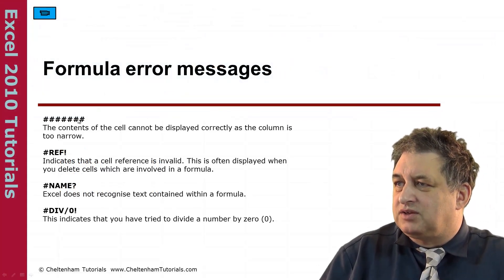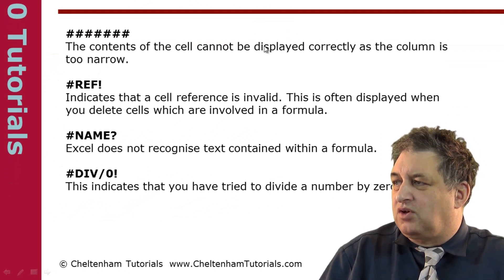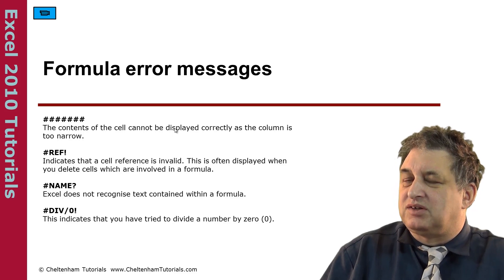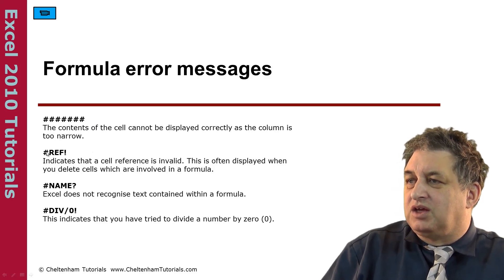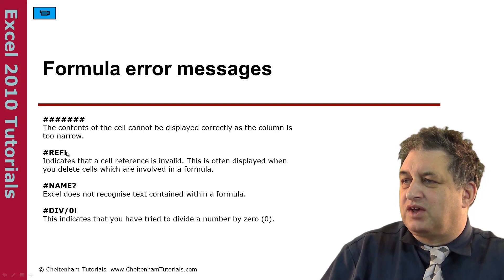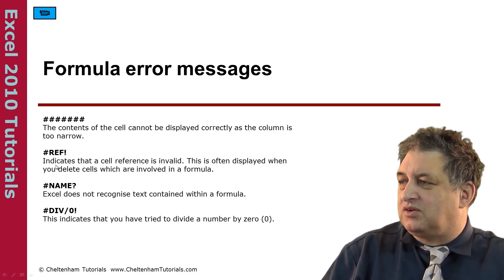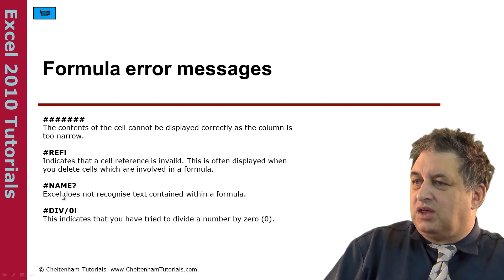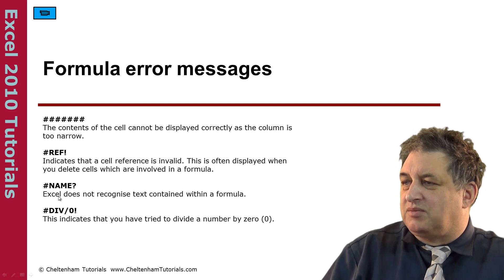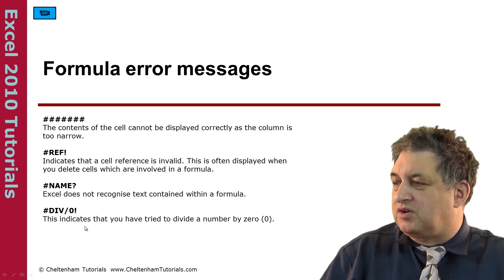Formula error messages. If you get a message like a row of hash signs, it generally means the contents of the cell can't be displayed because the column is too narrow. Just make the column wider and it will display the number without any further problems. If you see #REF!, that probably means the cell reference is invalid — you may be trying to delete cells involved in a formula. If you see a #NAME? error, Excel doesn't recognize the text within the formula. And finally, a divide-by-zero error indicates that you're trying to divide a number by zero.